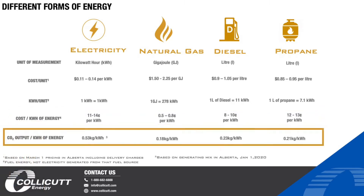Now let's look at CO2 output. Again, we're comparing electricity generated here in Alberta, which is relatively more dirty than other jurisdictions. An average kilowatt hour of power here in Alberta produces 0.53 kilograms of CO2, whereas natural gas produces 0.189. In California, power produces 0.2 to 0.25 kilograms of CO2 per kilowatt hour. So to heat your house using natural gas is actually more sustainable in California than using electricity to heat your home.